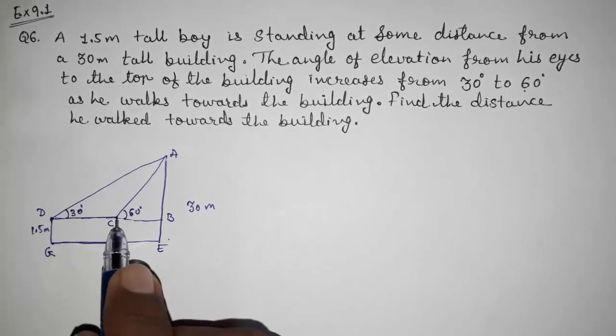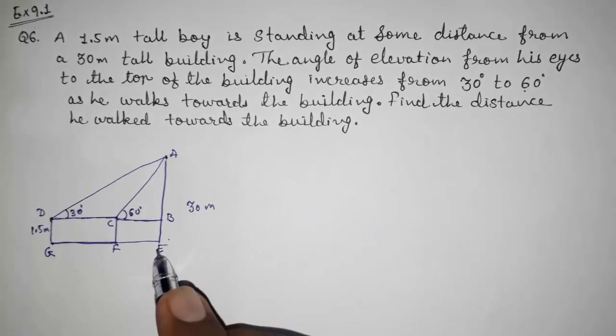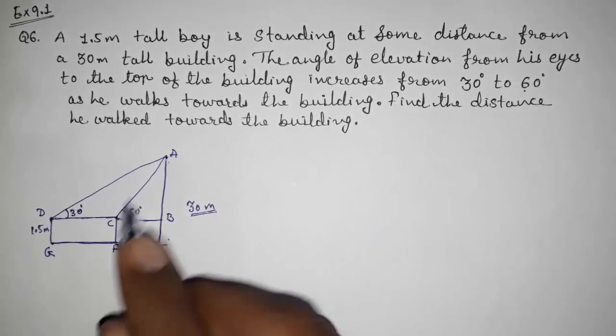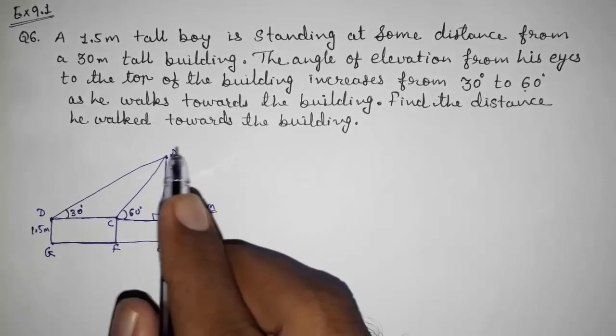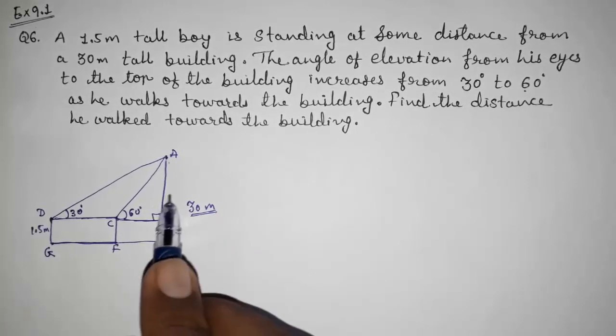Now let us look here. This AE is 30 meters. We want AB because we are getting right angle triangles ABC and ABD only, so we want their length only.